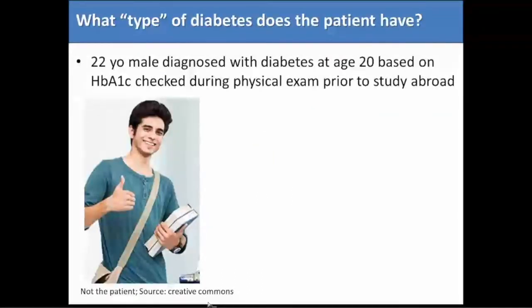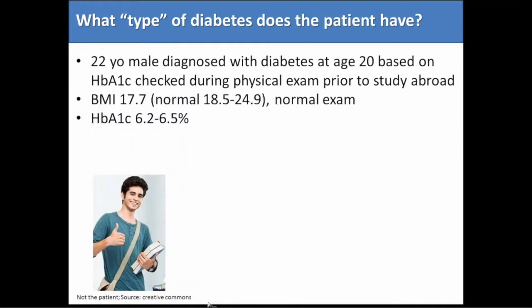I'll start with a case — a patient I saw in clinic (not the actual patient). He was a 22-year-old diagnosed at age 20, when a hemoglobin A1C was checked before he went on a study abroad trip as a university student. He was a really healthy young guy: his BMI was 17.7, he had a normal physical exam, and a hemoglobin A1C of 6.5% — right at the cutoff for type 2 diabetes, hovering in the pre-diabetes to diabetes range.